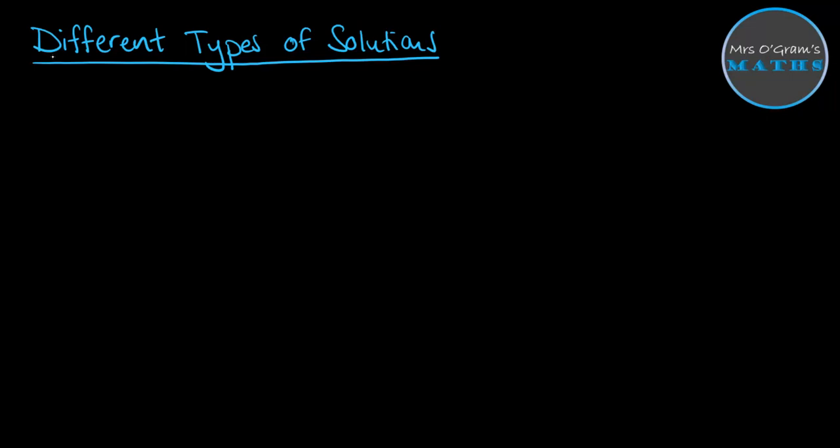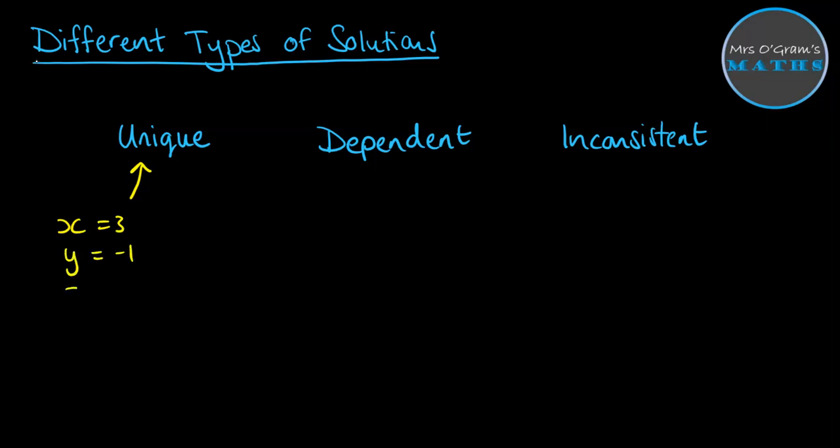So there are three different situations that can come out of this. The first one being that we get a unique solution, which is what we've already seen. So you get something like x equals 3, y equals minus 1, z equals 4. So you get a unique solution that is one point in space where those three planes intersect, and it's given by these values of x, y, and z.